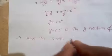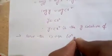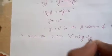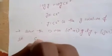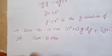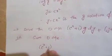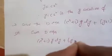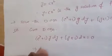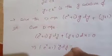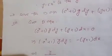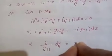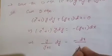Next: solve the differential equation (eˣ + 1)·y dy + (y + 1) dx = 0. This implies (eˣ + 1)·y dy = −(y + 1) dx, which gives y/(y + 1) dy = − dx/(eˣ + 1).